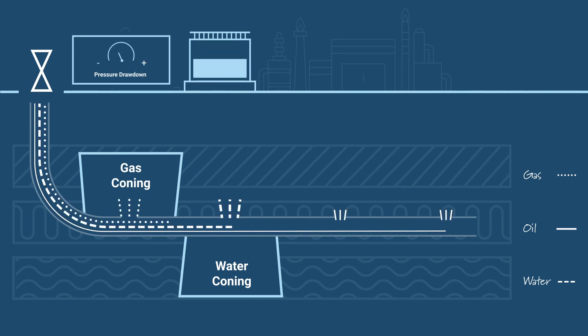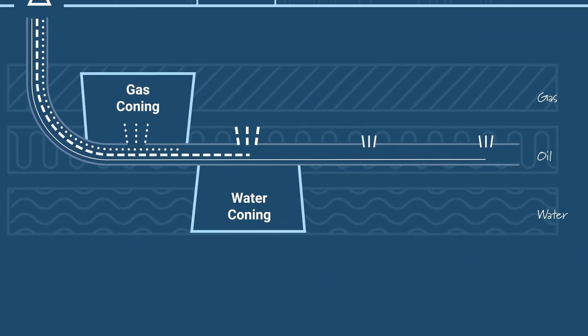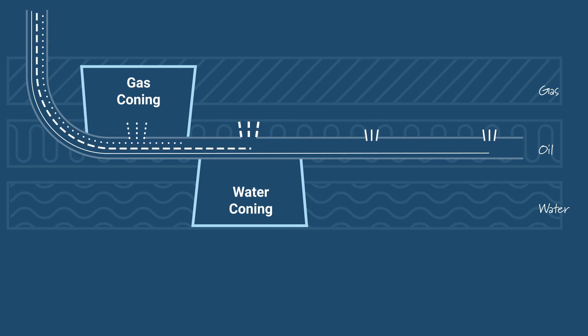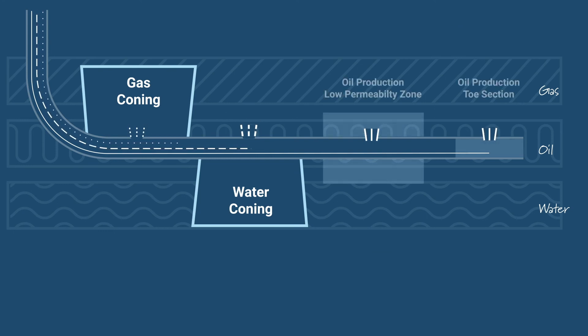Doing so reduces the pressure drawdown and therefore reduces the flow rate and the production of water and gas in breakthrough areas. Unfortunately, it also means a reduction of the flow rate in the areas where you're producing oil.